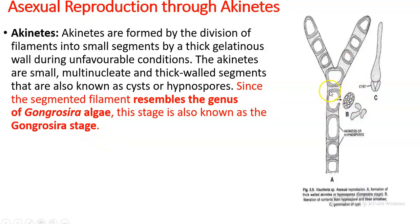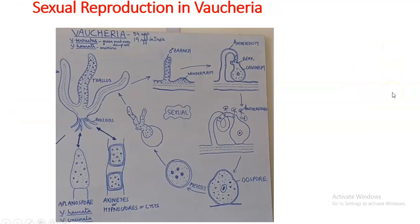When unfavorable situations are over, the akinetes germinate, releasing hypnospores. These hypnospores germinate and form a germ tube, which eventually converts into a new thallus of Vaucheria. This concludes asexual reproduction in Vaucheria.